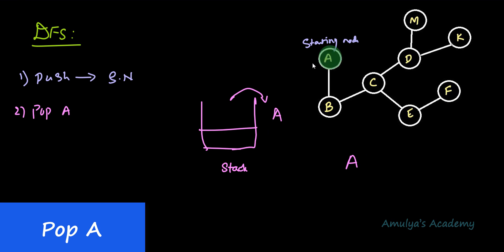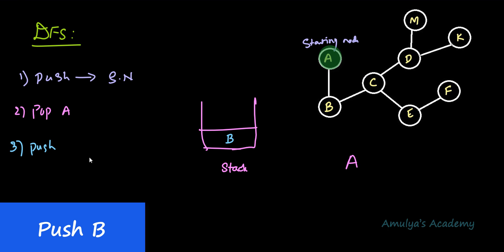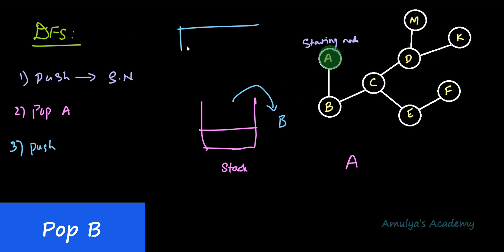Now we need to push all the unvisited adjacent nodes of the starting node onto the stack. A's adjacent node is B, which is unvisited, so we push B. Then we perform the pop operation — only one element is present, so we pop B. We check whether B is already visited. B is not visited, so we visit it and add it to the visited list. A is already in the visited list.